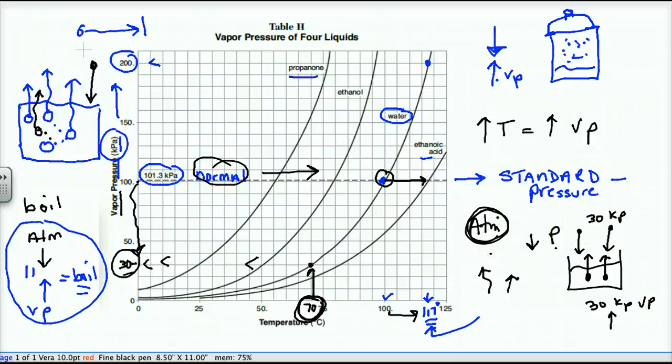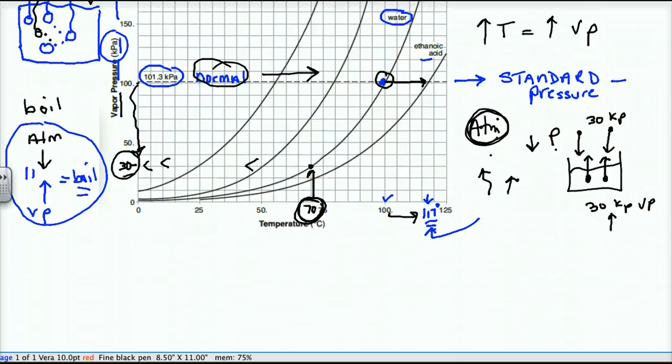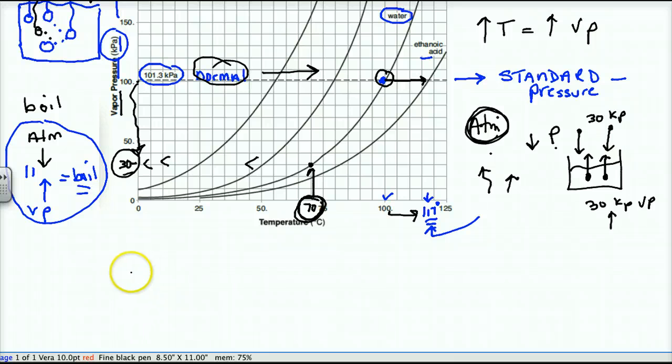Which leads me to an interesting question. What is the vapor pressure of any liquid at its normal boiling point? So at someone's normal boiling point, what must its vapor pressure be? Well, if it's boiling, the vapor pressure equals the atmospheric pressure.